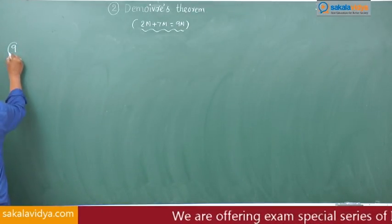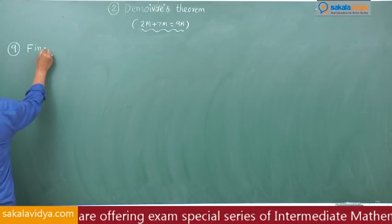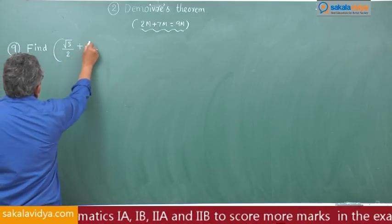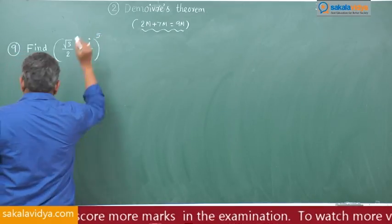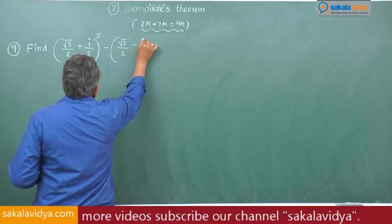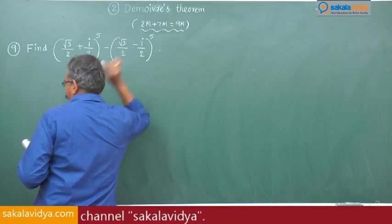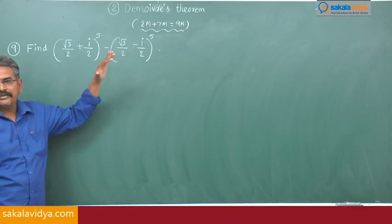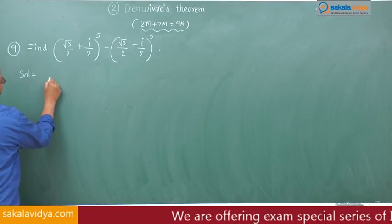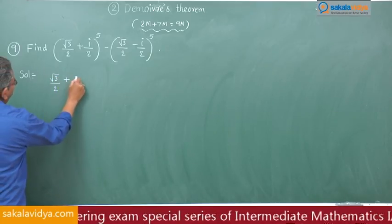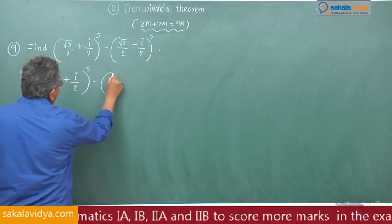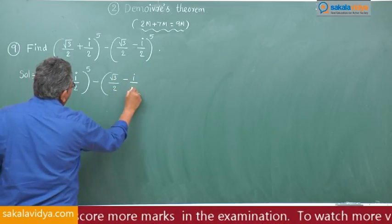Problem 9: find (√3/2 + i/2)^5 − (√3/2 − i/2)^5. That means we have to simplify this expression. Consider (√3/2 + i/2)^5 − (√3/2 − i/2)^5.